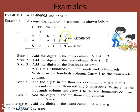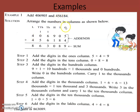So five will come under ones, zero will come under tens, nine will come under hundreds, six will come under thousands, zero will come under ten thousands, and four will come under lakhs. Similarly we will arrange the second number according to its place value, putting every digit under ones, tens, hundreds, thousands, ten thousands, and lakhs.